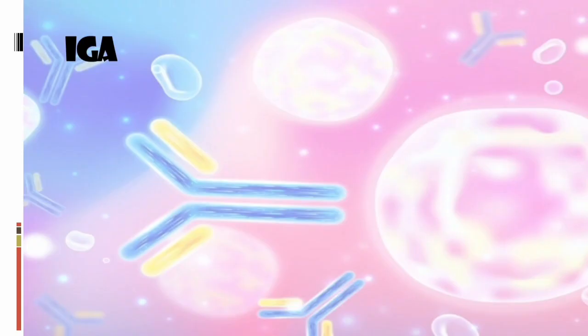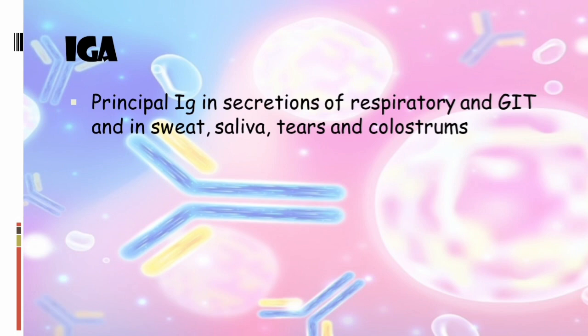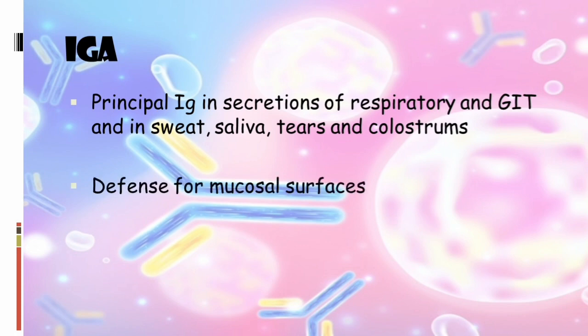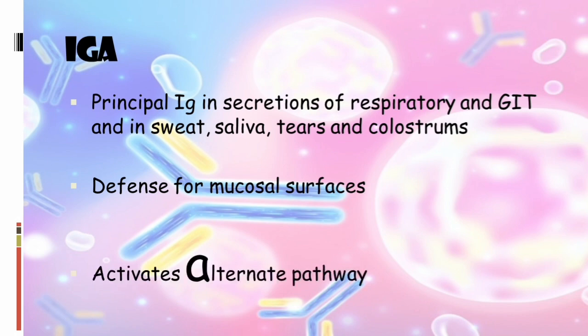Next comes IgA. Remember that IgA belongs to all types of secretions in the body — secretions from the respiratory tract, sweat, saliva, tears, colostrum, and even mother's milk. It is secreted from the mucosal surfaces and offers defense for those mucosal surfaces. IgA activates the alternative pathway — remember: A and A.